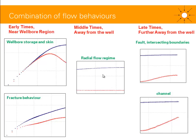The derivative plot will generally show a combination of flow behaviors. I separate the derivative into three time periods: early times near the wellbore region, middle times away from the well, and late times further away. Near the wellbore, in most cases you will see wellbore storage and skin — a long unit slope straight line and a hump in the derivative. If the well is fractured, you might expect fractal behavior: parallel lines for delta P and the derivative, with a half or quarter unit slope straight line representing linear flow or bilinear flow regime.